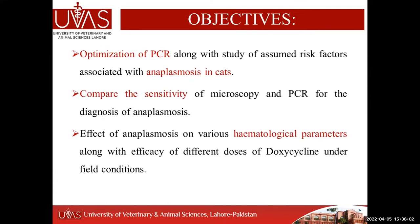This study was conducted with three main objectives. The first was optimization of PCR along with study of risk factors associated with anaplasmosis in cats — this being the first such study in Pakistan. The second was to compare the sensitivity of microscopy and PCR for diagnosis. The third was to evaluate the effect of anaplasmosis on hematological parameters and the efficacy of different doses of doxycycline — 5 mg/kg and 10 mg/kg body weight — under field conditions.